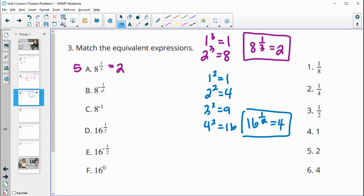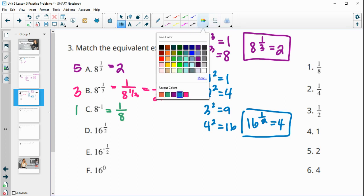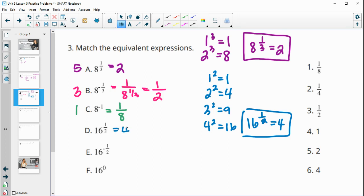And then 8 to the negative 1 3rd power would be the same as 1 over 8 to the positive 1 3rd. And we know that 8 to the positive 1 3rd is 2. So B is 1 half, which is number 3. Then 8 to the negative 1 is 1 over 8 to the positive 1 or just 1 8th, which we see at number 1. Then 16 to the 1 half power we talked about is 4. So that's number 6 here, which means 16 to the negative 1 half is the reciprocal of that or 1 4th, which is number 2. And then finally, 16 to the 0 power, anything to the 0 power is 1, and that's number 4.